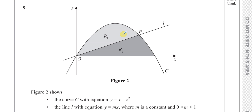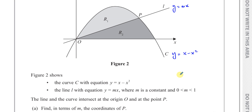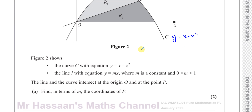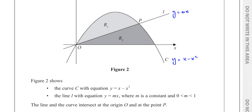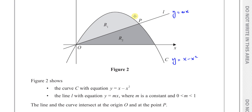There's a curve C with equation y equals x minus x squared, shown in figure 2, as is the line with equation y equals mx, where m is a constant and m is between 0 and 1. The line and the curve intersect at the origin O and at the point P. We need to find, in terms of m, the coordinates of the point P.